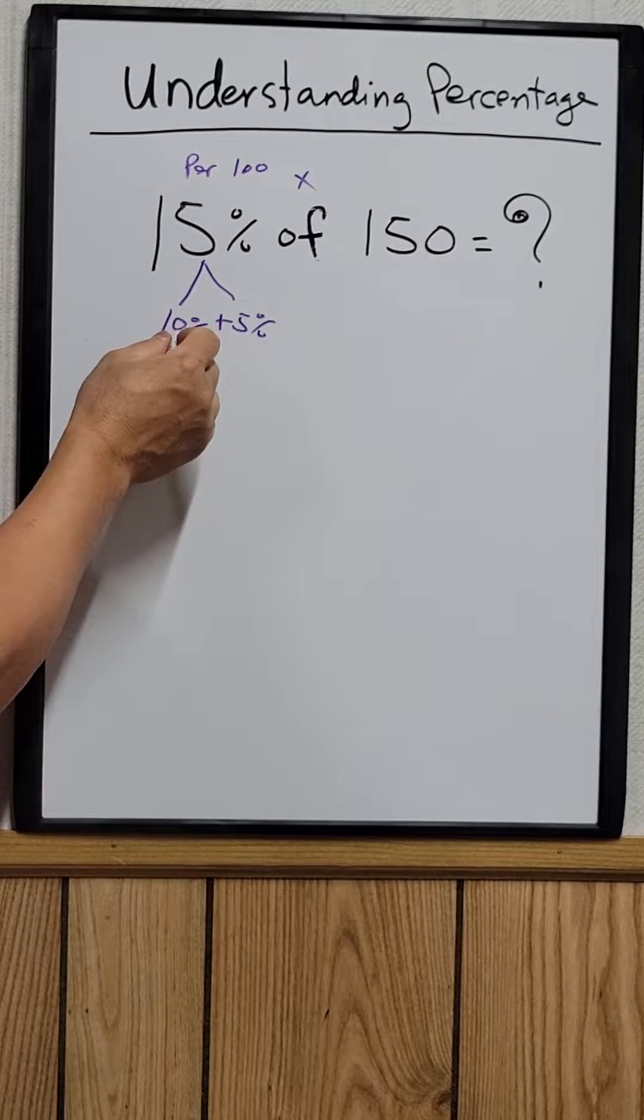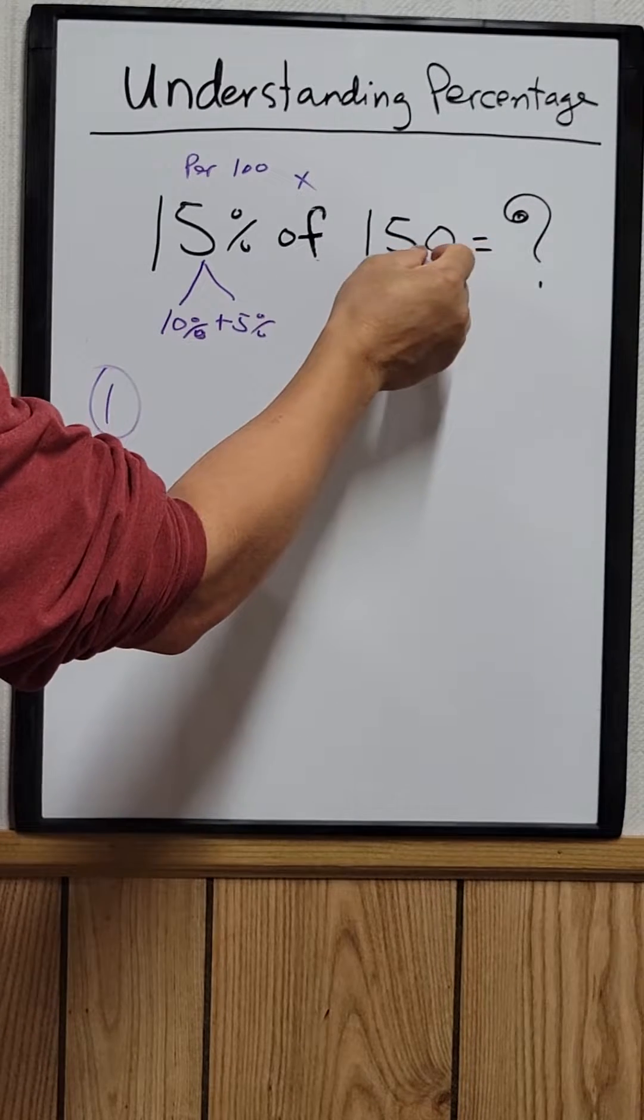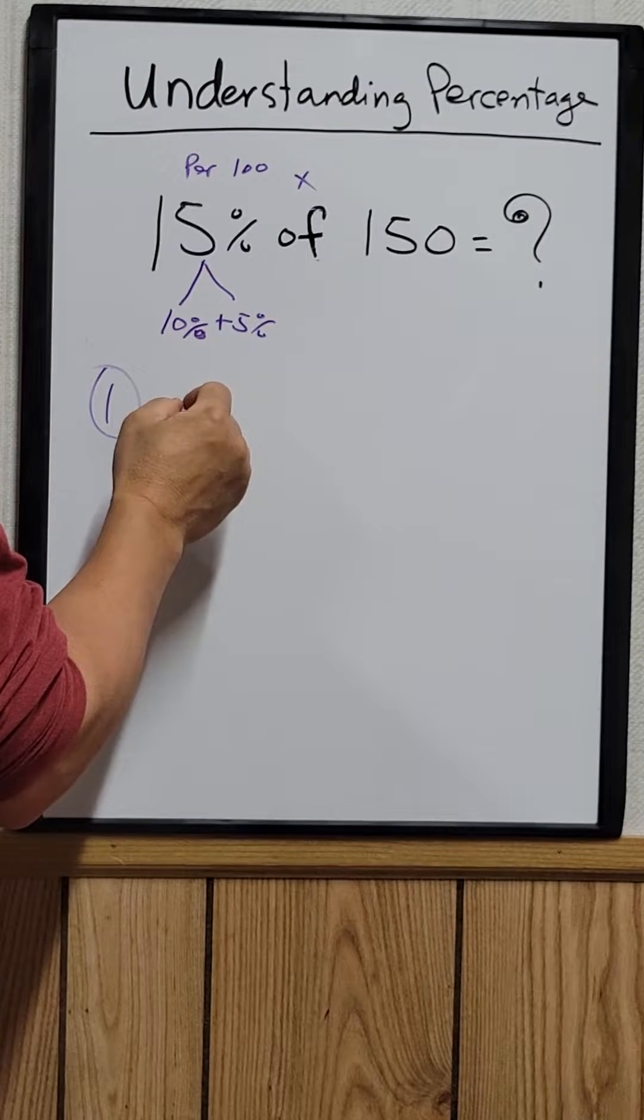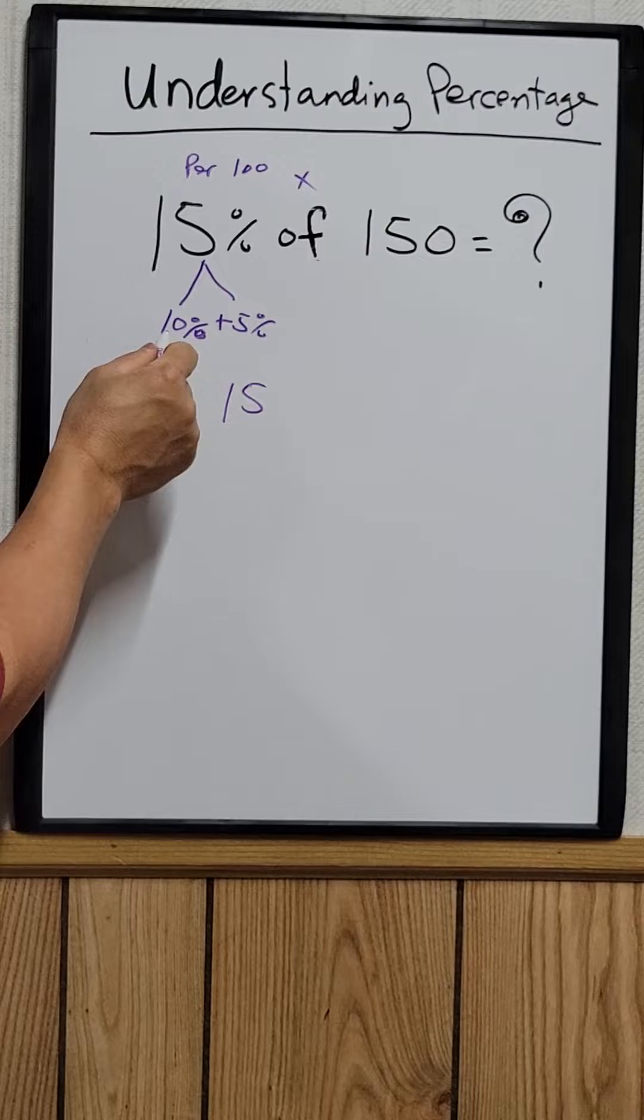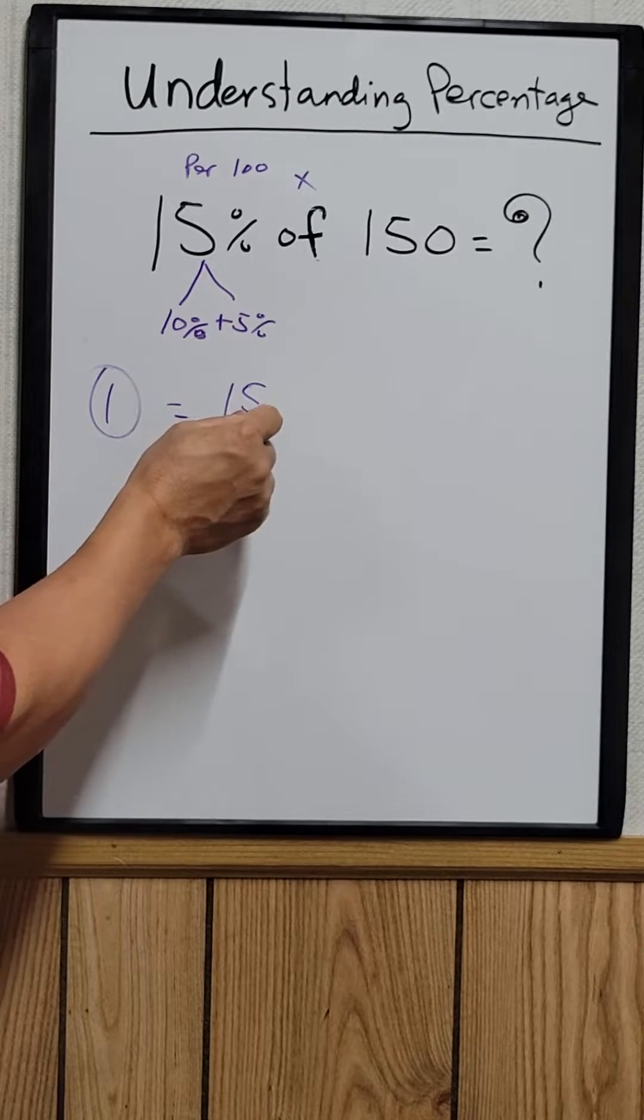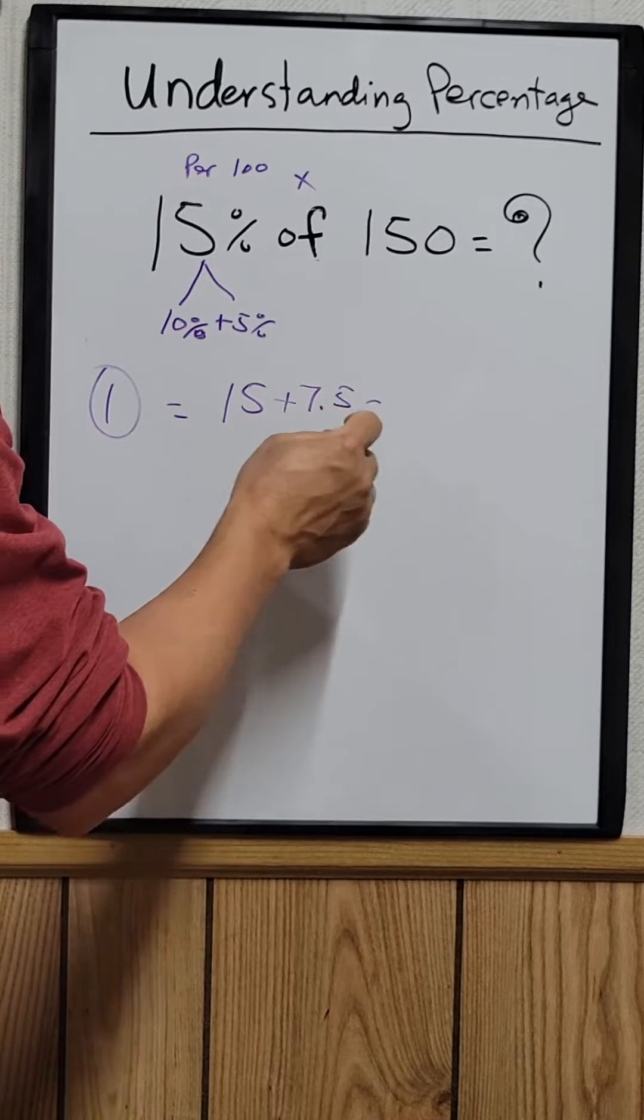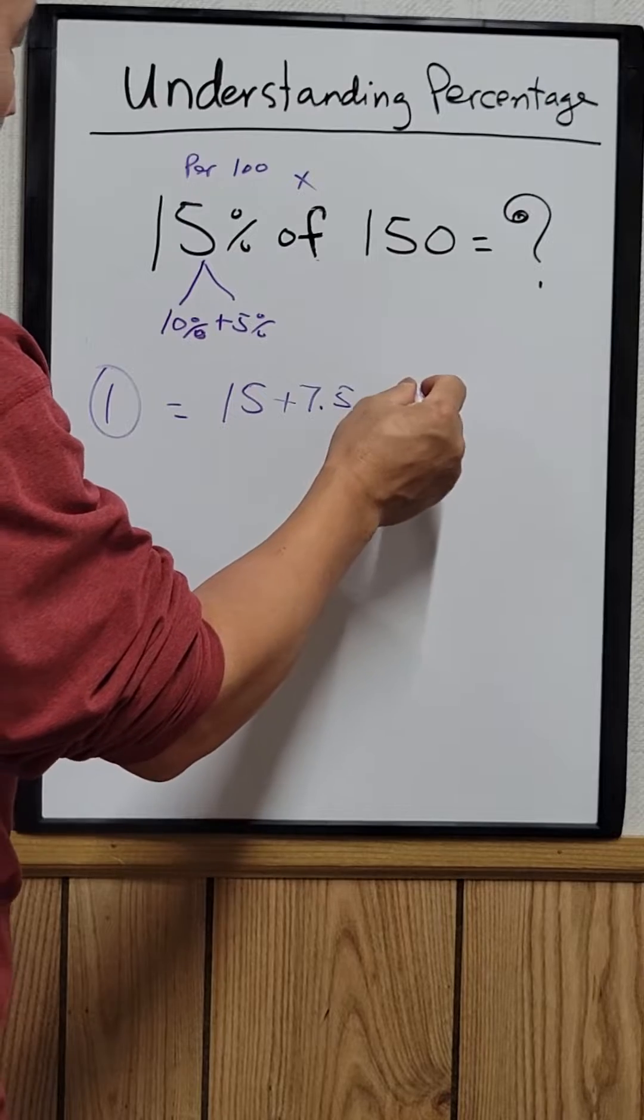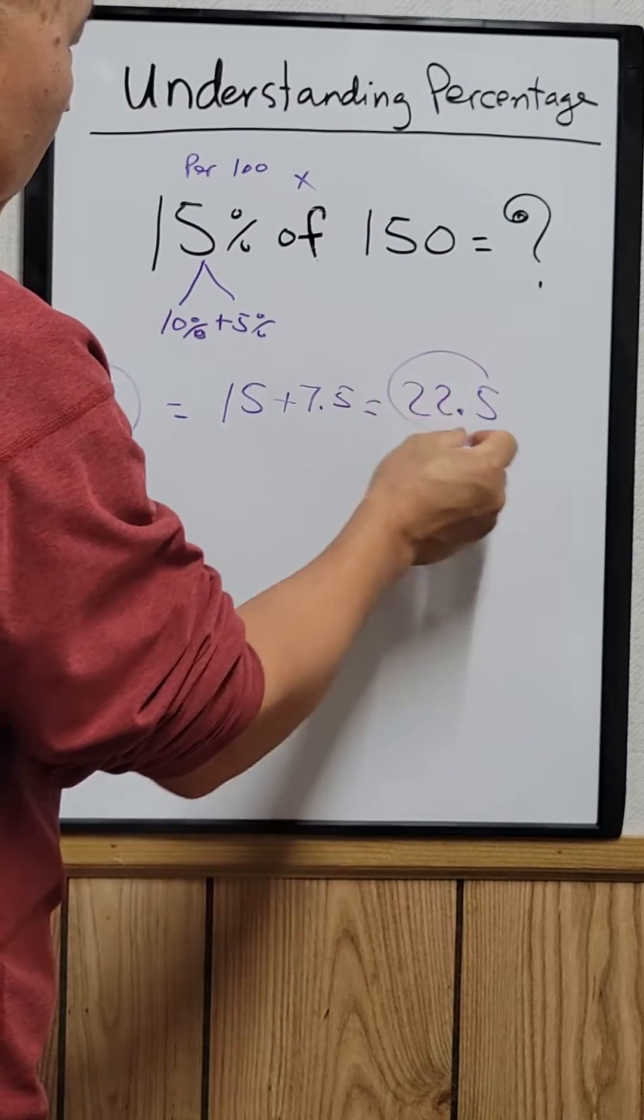So 10% of 150, you just move the decimal point, so it's equal to 15. And 5% is half of 10%, so half of 15 would be 7.5. So you add these two up to equal 22.5.